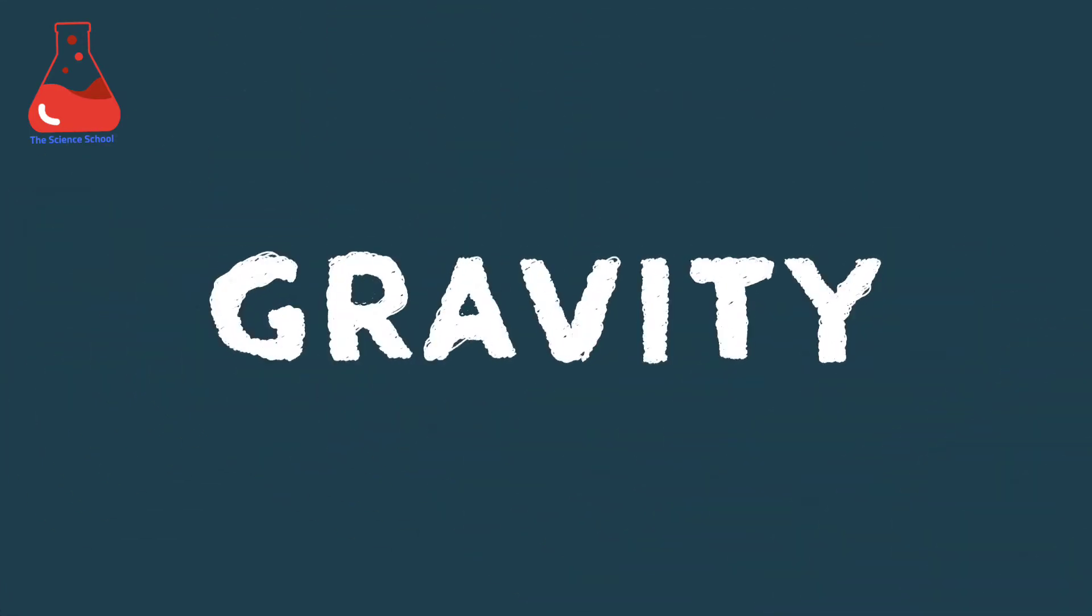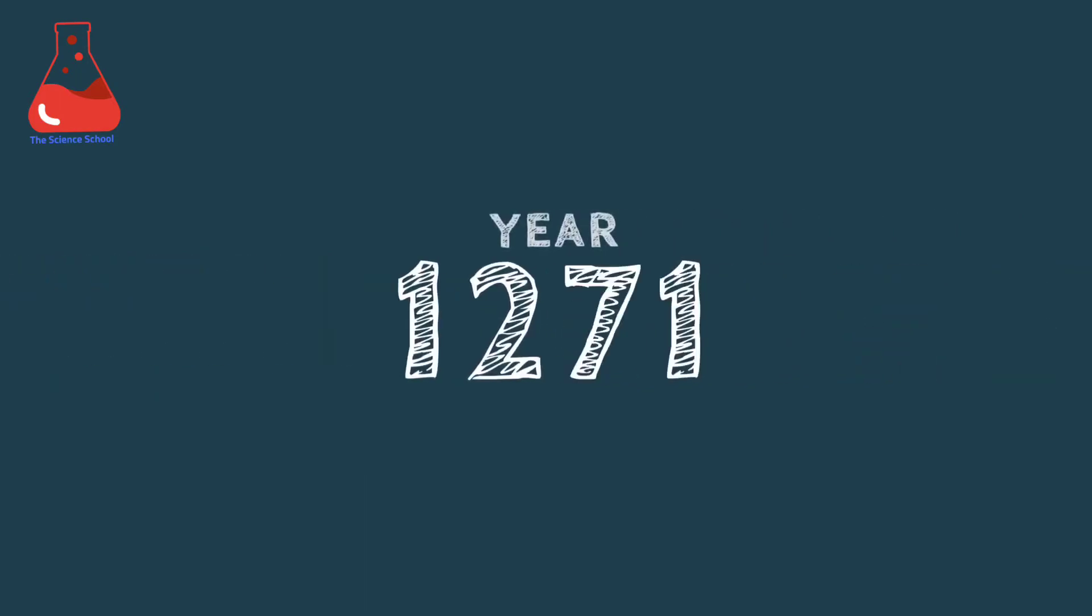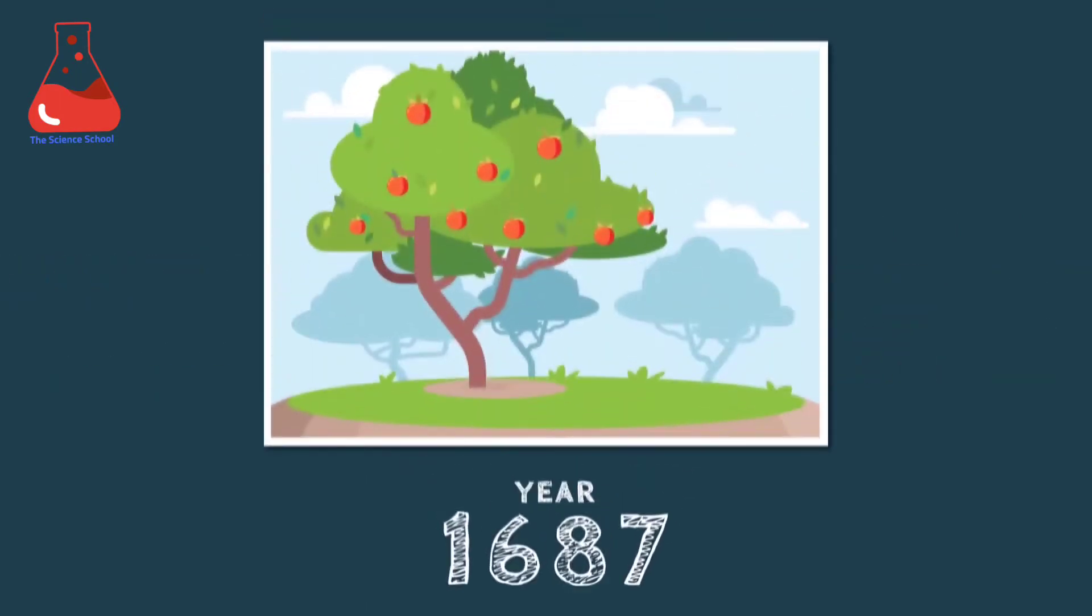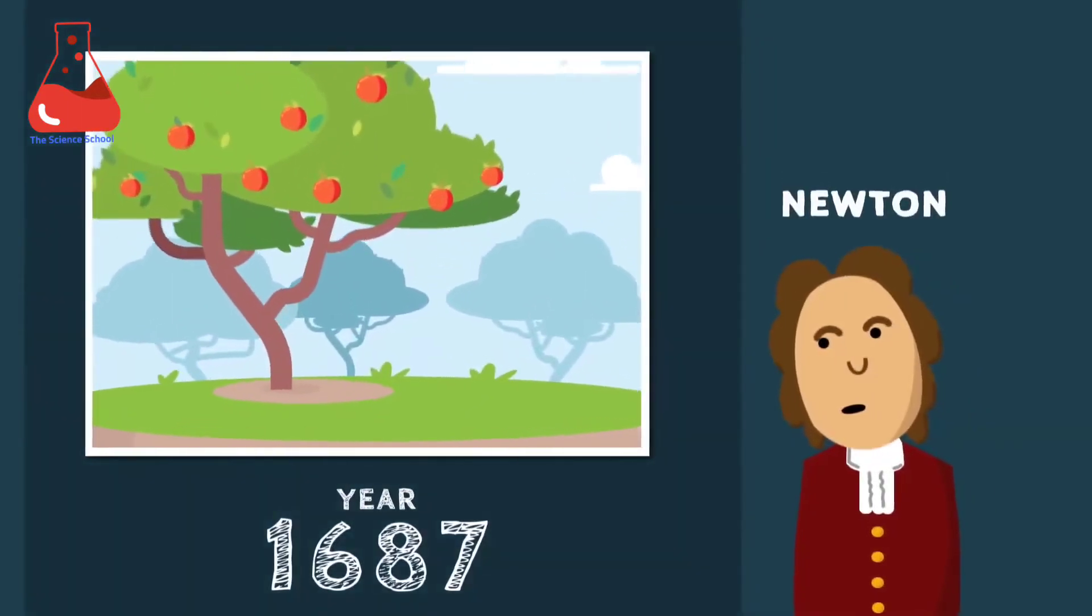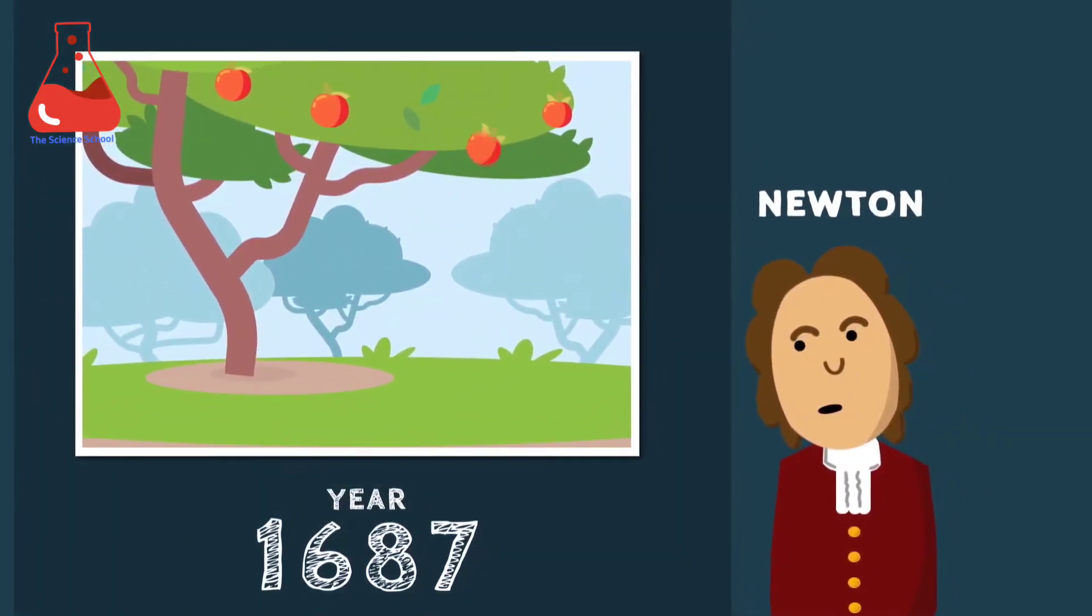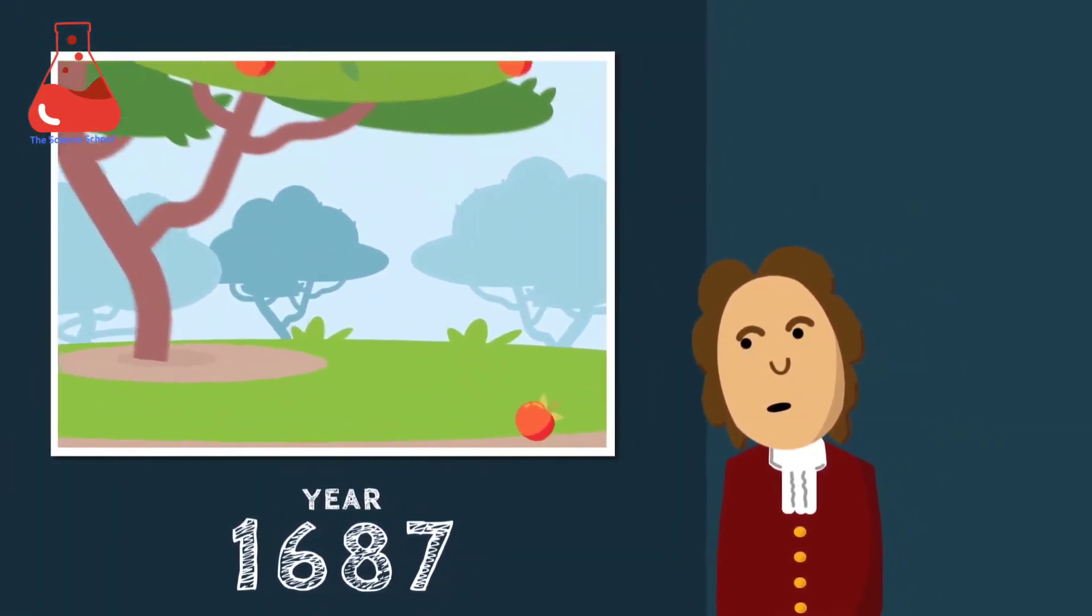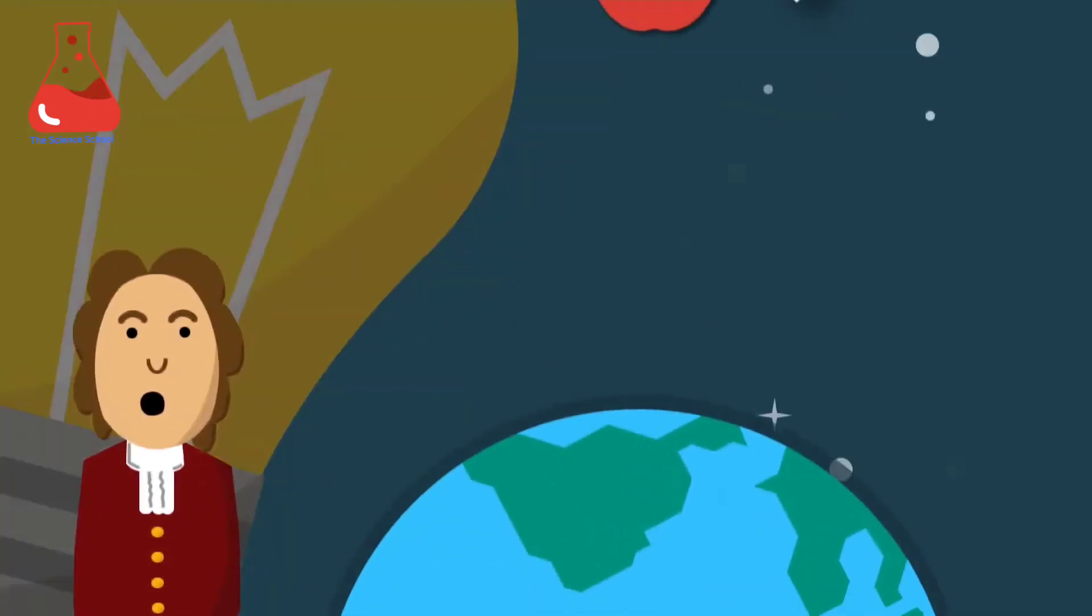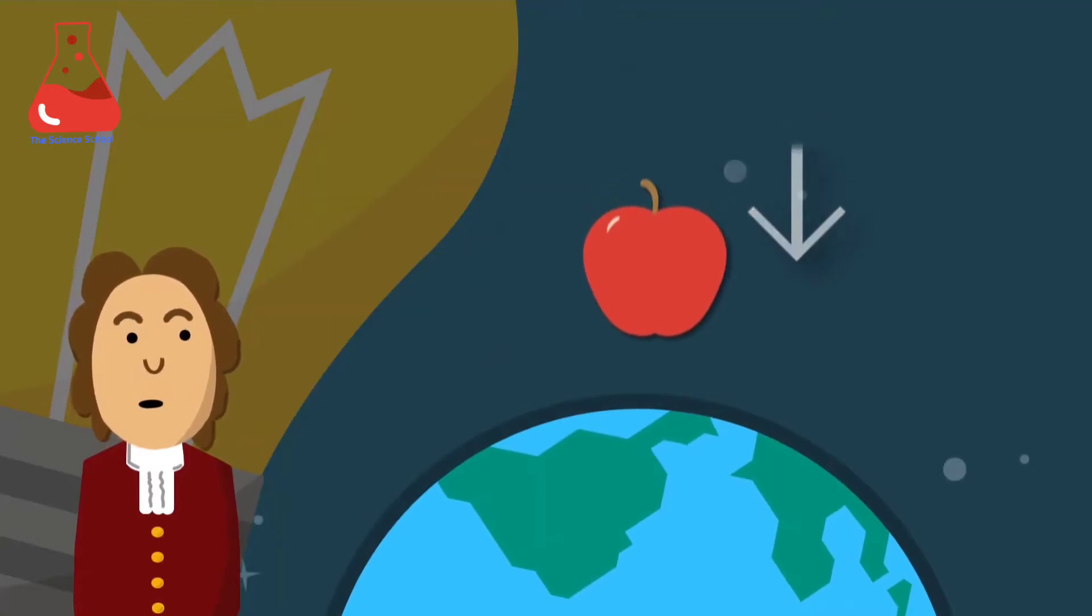So let's jump back in time to the year 1687. On a sunny day Newton observed an apple falling off a tree and he came to the conclusion that a force called gravity attracts masses to the center of Earth.